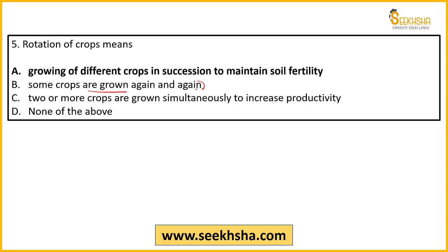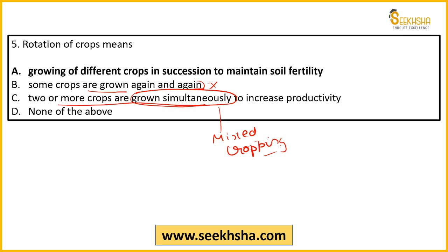Option B — some crops are grown again and again — yeh toh solo cropping ho gaya, koi rotation nahi. Option C — two or more crops simultaneously — yeh mixed cropping, double cropping, ya triple cropping ho gaya. Rotation of crops matlab: for example rice grow kiya, next season mein legume/pulses grow karo taaki jo nutrients — nitrogen wagera — soil se use hua hai woh recharge ho sake. So option A is the right answer.